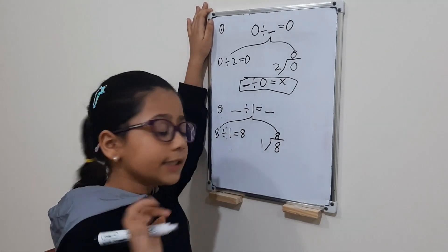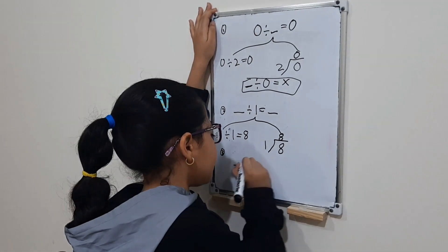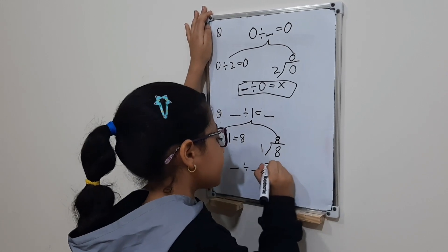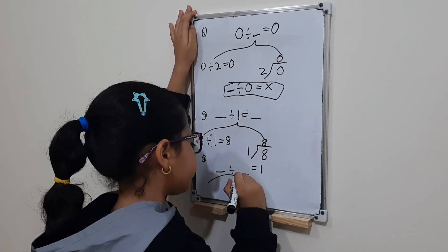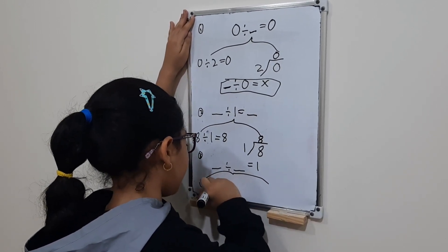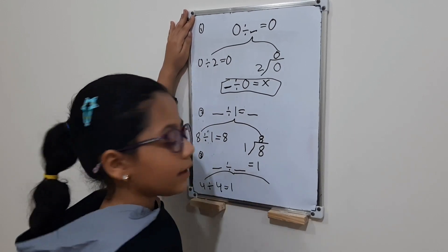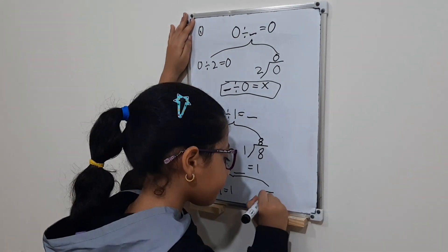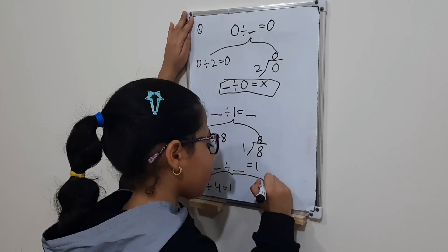The third step: a number divided by the same number equals one. Example: four divided by four equals one. We will make it in the vertical way — four divided by four equals one.